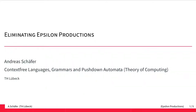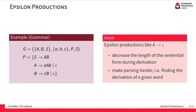This video is about eliminating epsilon productions for context-free languages. Epsilon productions are productions that replace a non-terminal by epsilon, the empty word. Looking at this example grammar, we can see that we can replace A by epsilon, and the same for B.